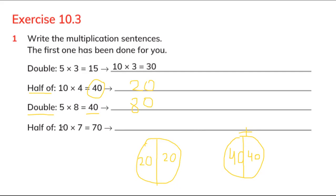What is the half of 70? 35 and 35 make 70, so you can make them two parts — half.